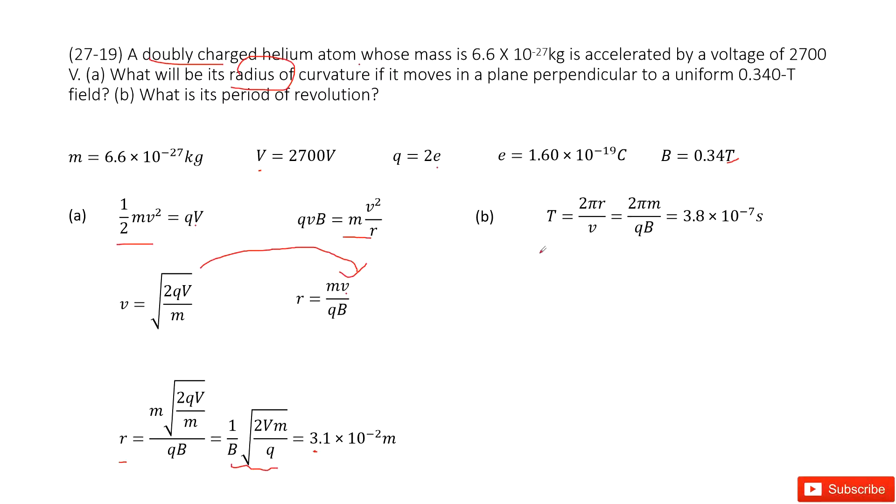The distance it moves for one cycle is 2πr. The speed is v. So the time taken, the period t, equals 2πr divided by v.